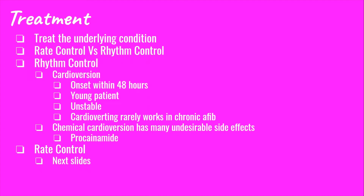For treatment of AFib RVR, there are two methods: either rate control or rhythm control. Let's first talk about rhythm control, meaning you are trying to convert the patient back to sinus rhythm. The main way of doing this is through cardioversion. Most sources say that if a patient is very unstable, cardioversion should be attempted.